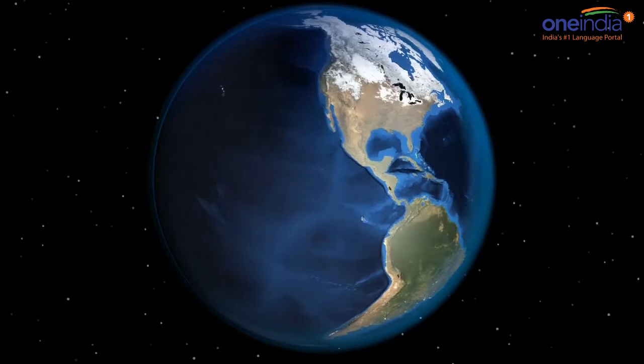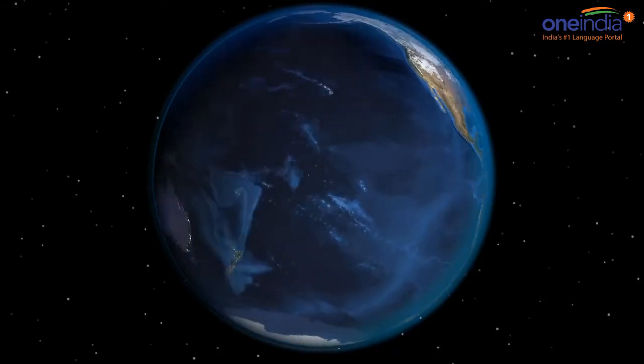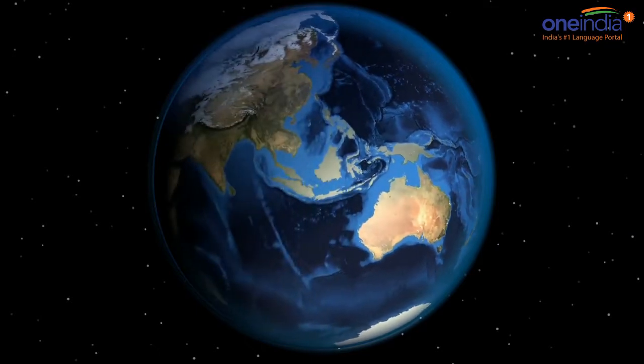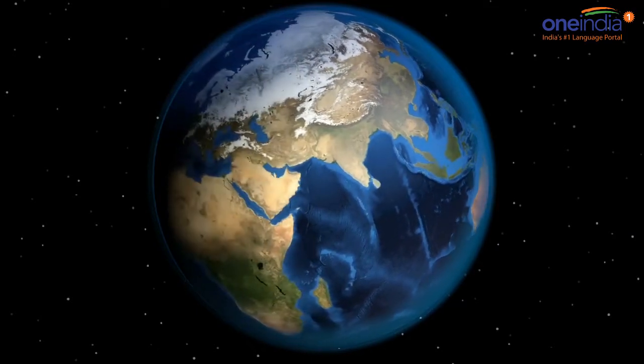NASA probes have spotted a man-made barrier around the Earth that prevents high-energy space radiations from reaching the planet, scientists have said.